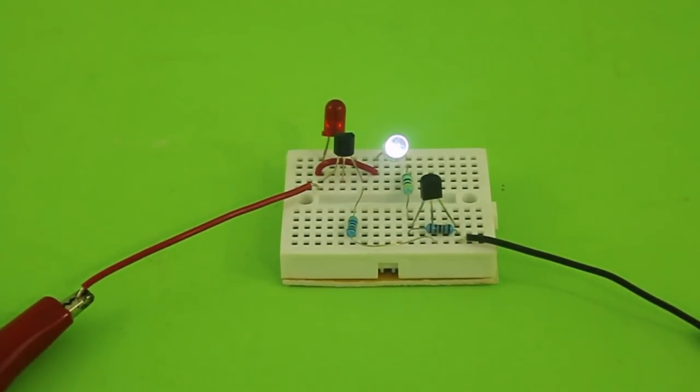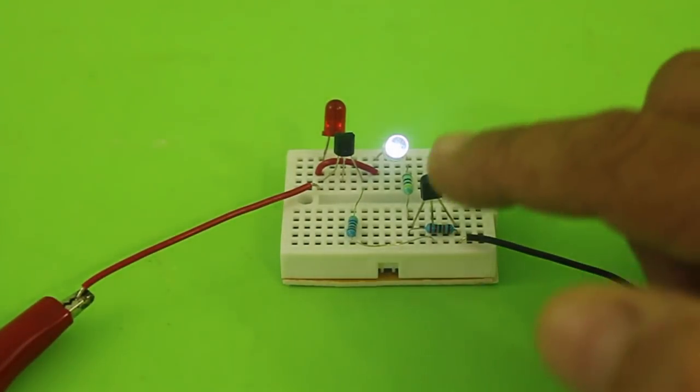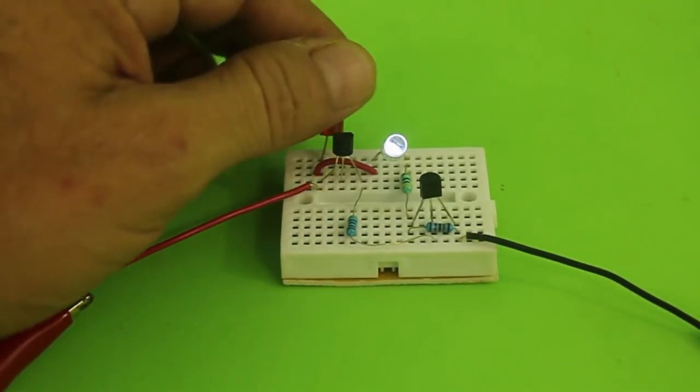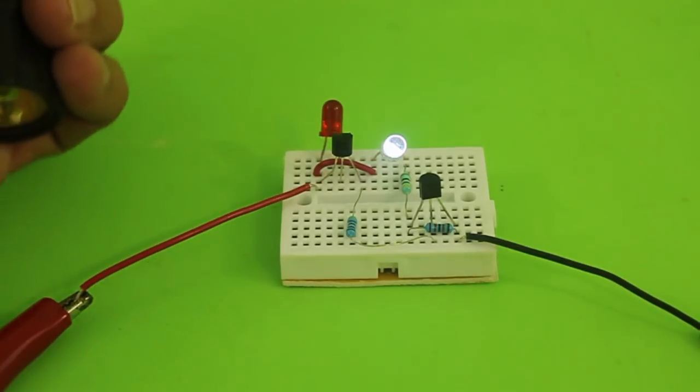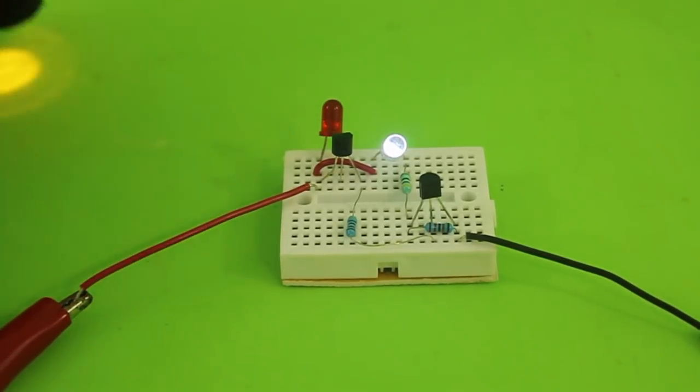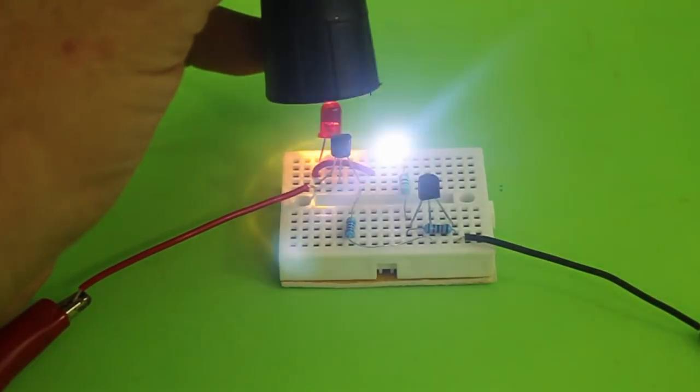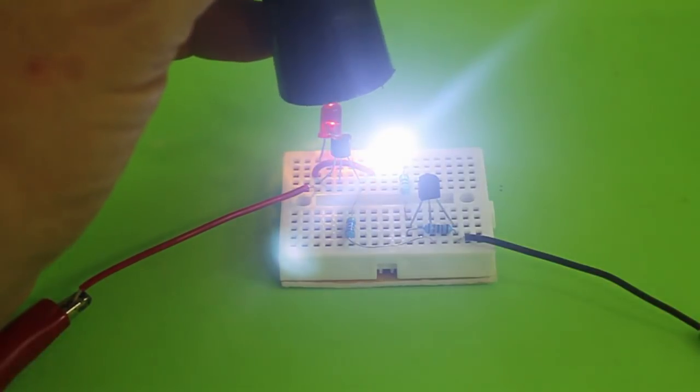So here's the circuit. The red LED is the detector and you can see a faint glow in the other LED from the ambient light. But now I'm going to bring a lamp close to the detector LED and you can see the other LED glow with all its intensity.